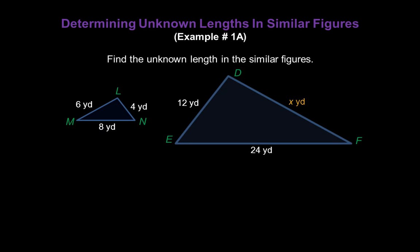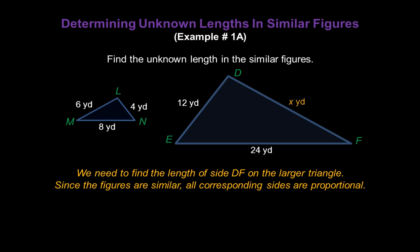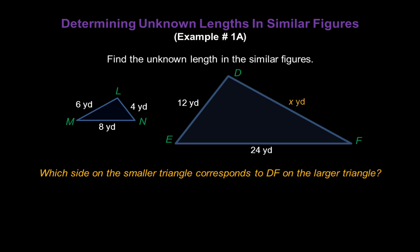Let's start by finding the unknown length in the similar figures below. We need to find the length of side DF on the larger triangle. Since the figures are similar, that means that all corresponding sides are going to be proportional.